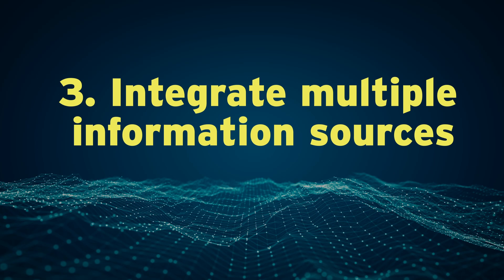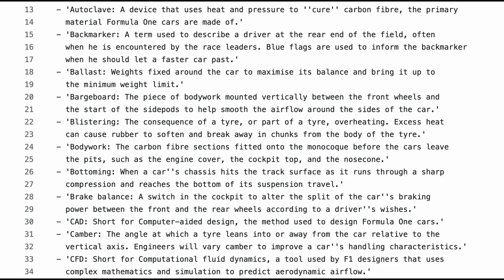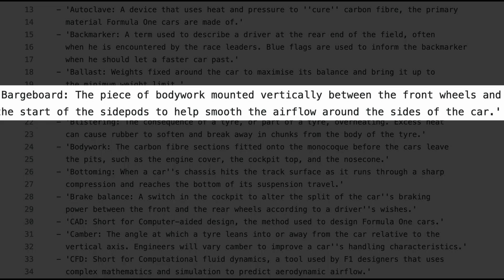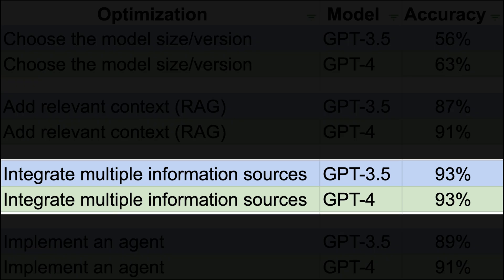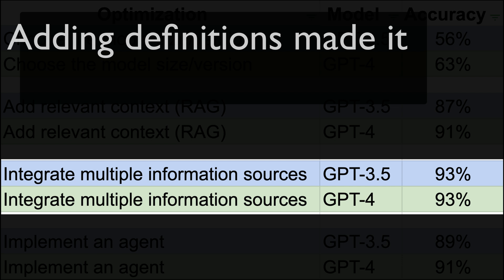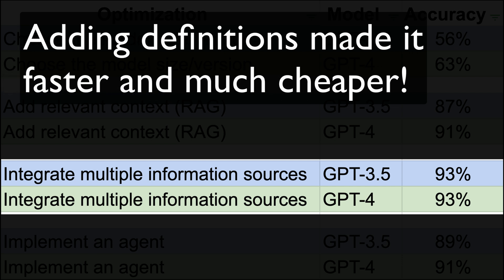Third, integrate multiple information sources. As is common in many business applications, this solution underperforms because the LLM doesn't understand unique or arcane terms. To overcome this challenge, we integrate definitions, such as the meaning of barge board. The results are the most significant findings of this study: both GPT-3.5 and GPT-4 achieved the same accuracy score — 93%. Some engineering work allows us to use a faster, cheaper model and get the same results.